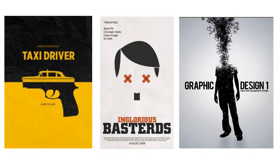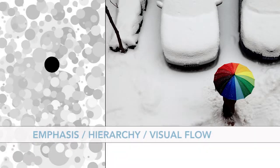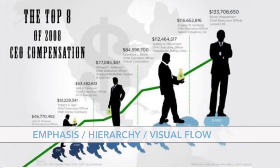Now as always, remember we have our three constants that are still the same: content, space, and form. But we're going to add three new components that will help make a great poster design, and they are emphasis, hierarchy, and visual flow.